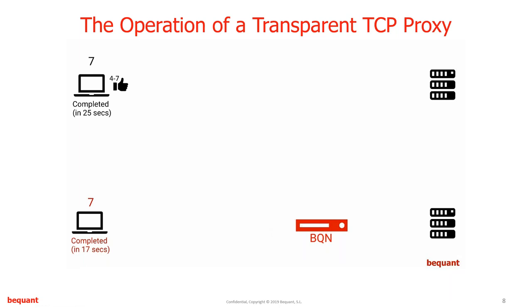The third acceleration mechanism involves our modified TCP algorithms. When we send packets from our buffer, we use standard TCP but with improved algorithms for deciding the optimal send speed. Our patented algorithm does not get confused by packet losses or latency the way standard TCP does. In those conditions, standard TCP unnecessarily backs off, but our algorithm will end up sending at a higher speed, much closer to the network's actual optimal capacity.